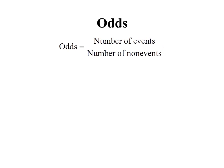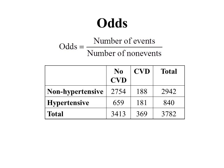What is an event and what is a non-event is different for every situation. Let's look at this data, which relates hypertension to cardiovascular disease. We surveyed 3,782 people. 3,400 of them did not have cardiovascular disease, and 369 of them had cardiovascular disease.